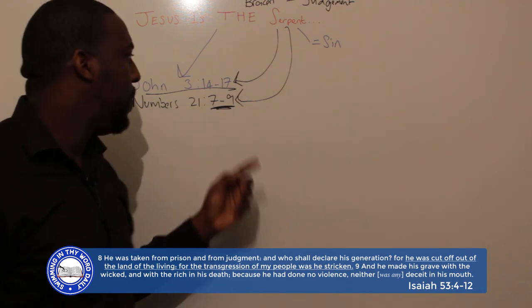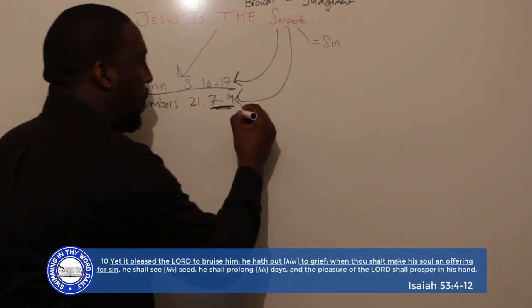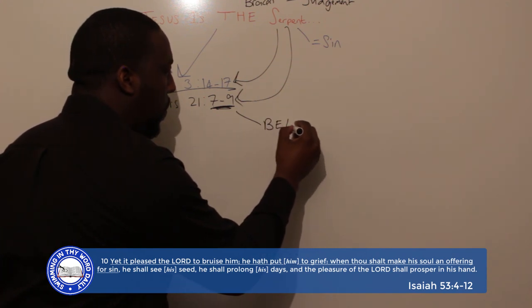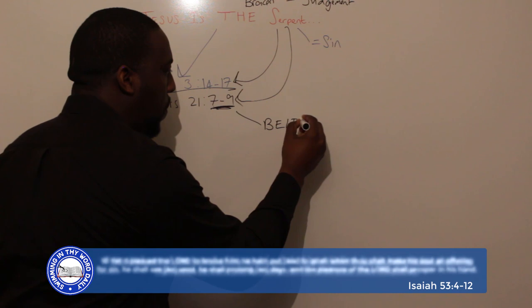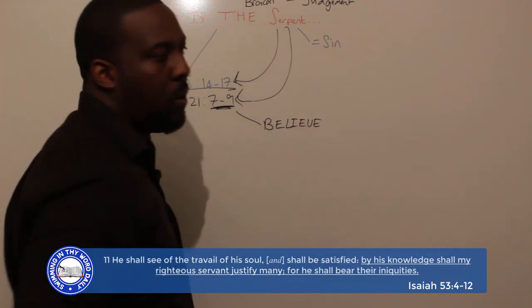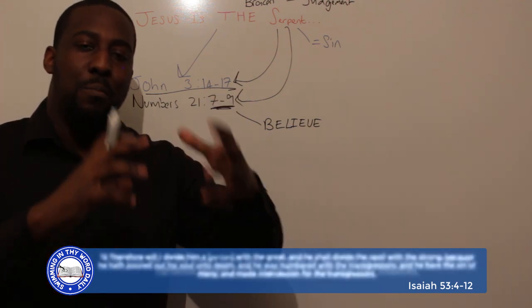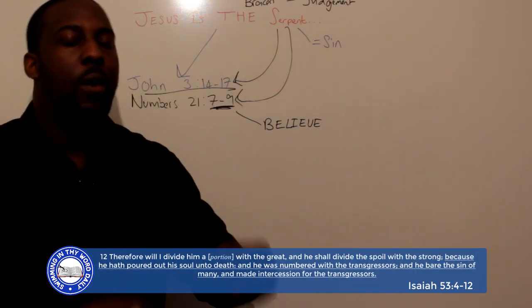What did they have to do? Israelites, what I'm going to do is I'm going to set up this serpent, this brazen serpent, I'm going to put it on a pole and I'm going to lift it up, and anyone who looks on it is going to live.